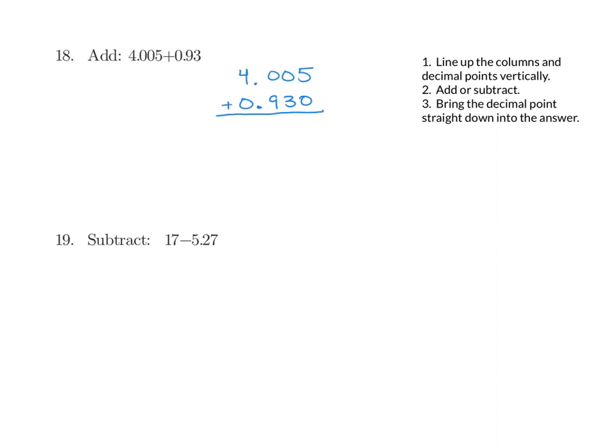And now if we add straight down, starting on the right, we get 5, 3, 9, and 4. We bring down our decimal point, and so we get 4.935.